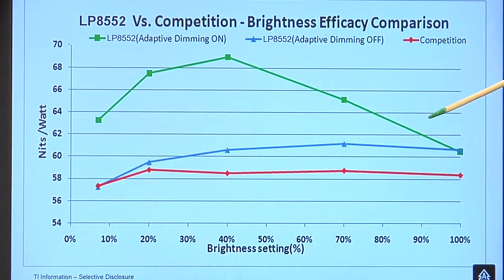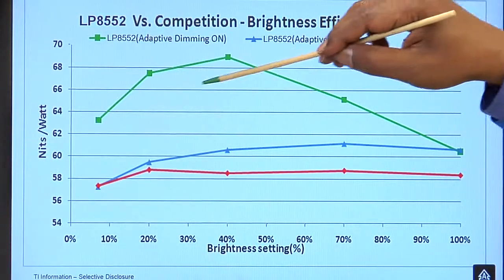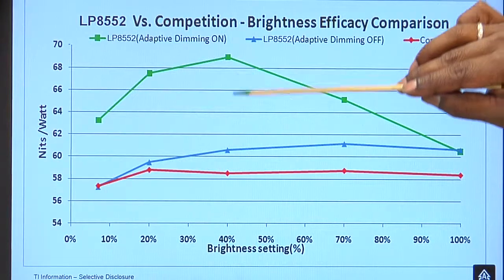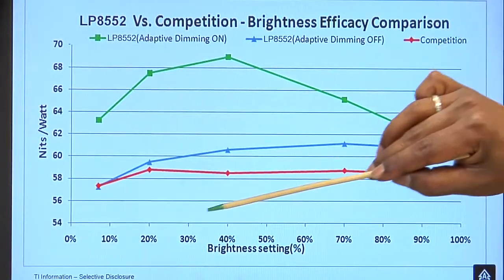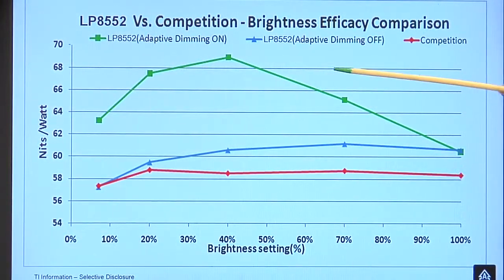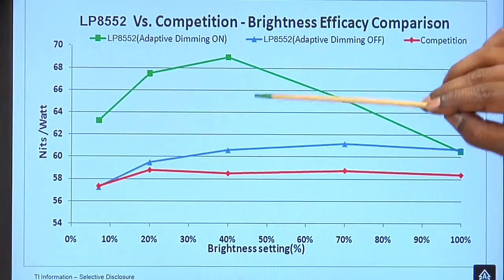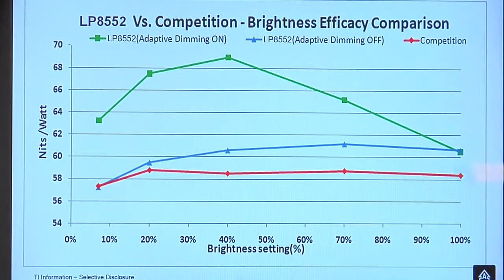Now, with the Adaptive Dimming on, the green line here, you can see much higher light output for any given brightness. If you translate it the other way around, much lower input power for the same brightness.